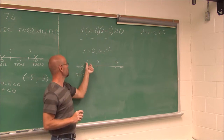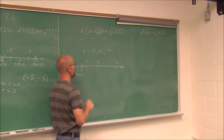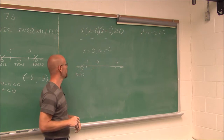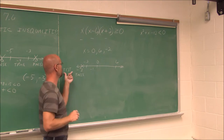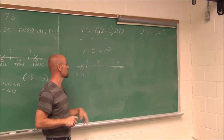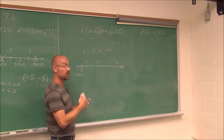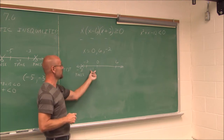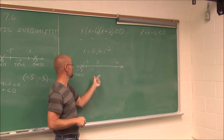If I choose a value between negative 2 and 0 — let's say negative 1 is my test point. Please do not confuse your test points with your critical points — that happens quite often when we're working with numbers. Make sure these are just test points; they're not going to be in your final answer.